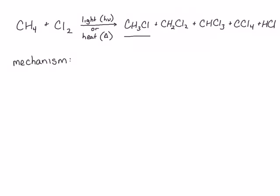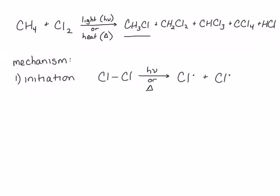Remember that the first step of our radical chain reaction is initiation. For this reaction, initiation involves the generation of chlorine radicals. One molecule of chlorine breaks homolytically to give us two chlorine radicals. Take a moment to calculate the formal charge of the chlorine radical. Now we're going to draw the mechanism of this step. Remember that a mechanism shows which bonds break and where the electrons go and which bonds form, and it does this using arrows.